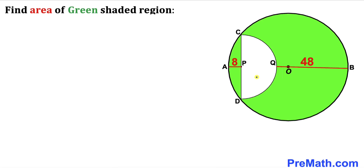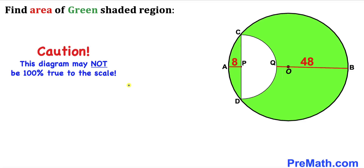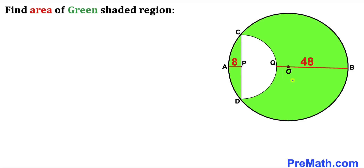Welcome to pre-math. In this video we have a white semicircle confined in a big circle, where points P and O are their centers and CD is a chord. Line segment AP is 8 units and line segment QB is 48 units. We are going to calculate the area of the green shaded region. Note that this figure may not be 100% true to scale.